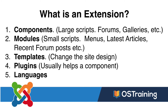Number three is templates — templates change the site design. If you remember from the introduction to content management systems, templates do not change your content, and when we're adding content we're not designing our site. Number four is plugins, which help components by doing a variety of tasks. And number five is languages — Joomla has been translated into dozens of languages and truly is a global content management system.